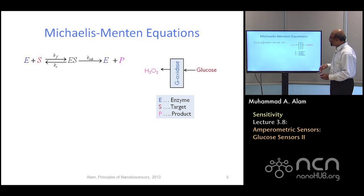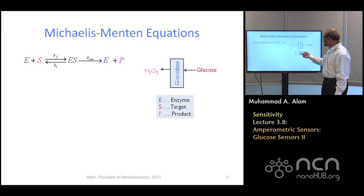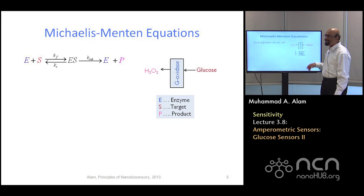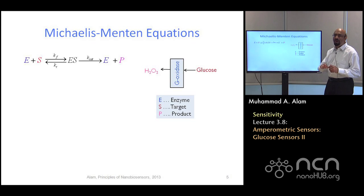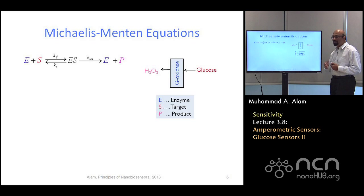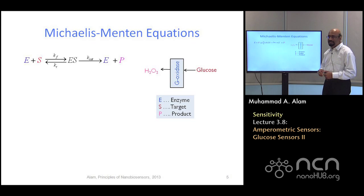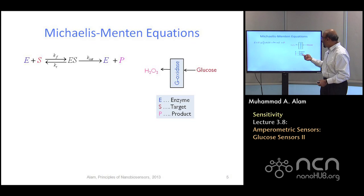Here is how it works. Assume glucose is coming in — we'll call that a substrate, from the biochemistry literature, or S, or simply the target molecule. This molecule, on its own, if it simply landed on the platinum surface, nothing would happen, because the platinum surface wouldn't recognize glucose. What you need is glucose oxidase to hold the molecule in place and allow the reaction to occur, so hydrogen peroxide comes out. Hydrogen peroxide is our product, and E is the enzyme.